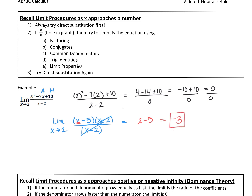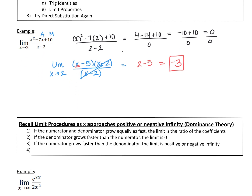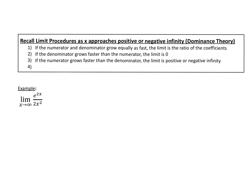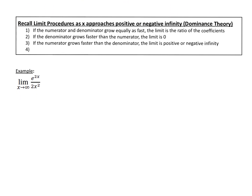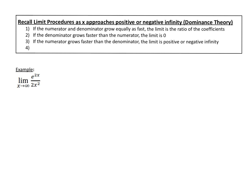Okay, doesn't seem too bad. Let's recall some limit procedures as x approaches positive or negative infinity. Remember, this is that dominance theory. If the numerator and denominator grow equally as fast, the limit is the ratio of the coefficients. If the denominator grows faster than the numerator, the limit is 0. And if the numerator grows faster than the denominator, the limit is either positive or negative infinity.